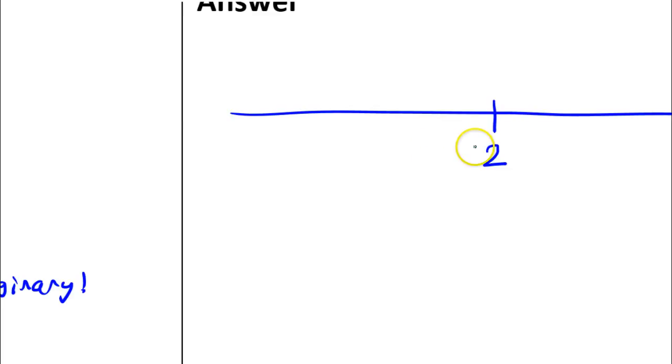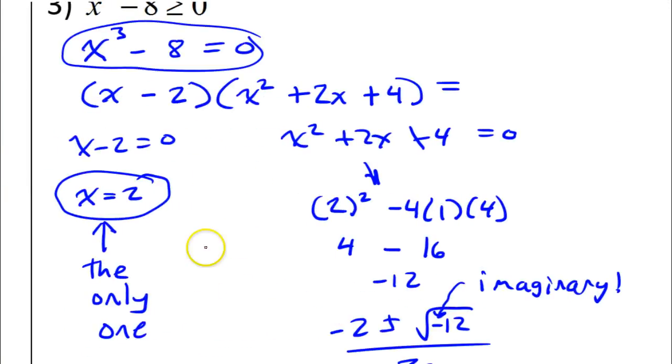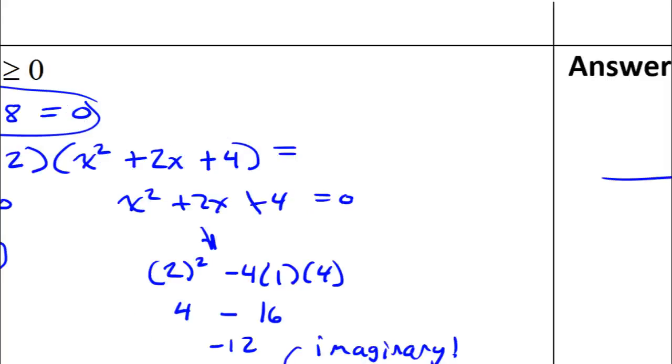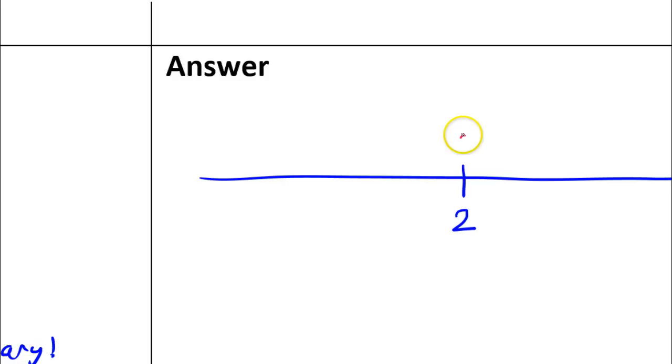So, now that I've got the critical value, I need to decide if it should be graphed as an open circle or a closed circle. Will it be included or not? Two is the value that makes the function equal to zero. We want the values where the function is greater than or equal to zero. So, the critical value of two should be included. So, I'm going to draw it as a closed circle.